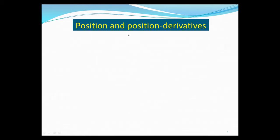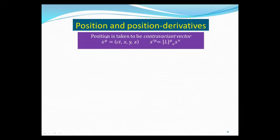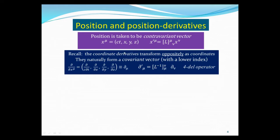Let's talk about the position vector and its derivatives. We take the position to be a contravariant vector, meaning it transforms according to the Lorentz transformation. The coordinate derivative transforms oppositely, so we naturally identify these derivatives as the covariant components of a vector — written as del_mu with a lower index. The zero component is the derivative with respect to ct, and the first, second, third components are derivatives with respect to x, y, z. As covariant components, del_mu transforms with the inverse Lorentz transformation.